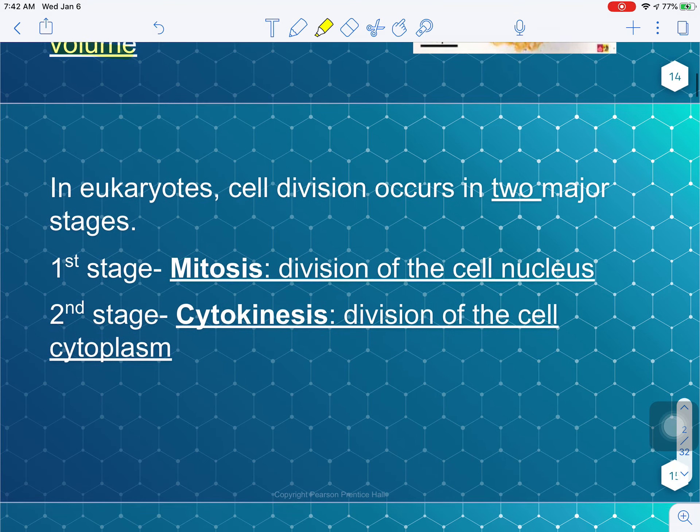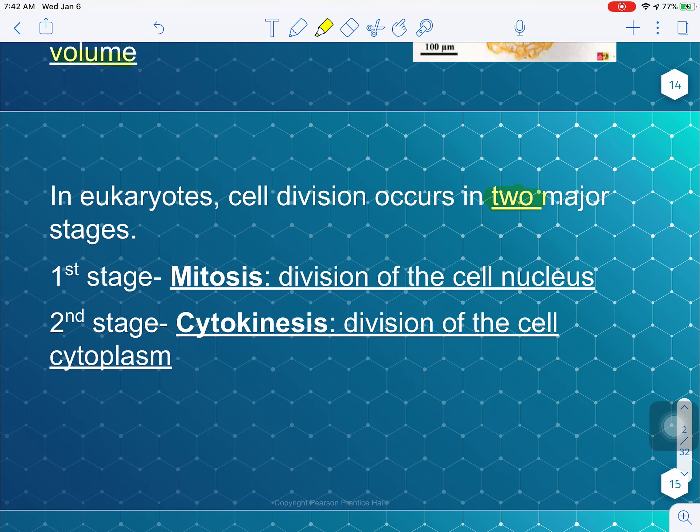Now cell division is going to occur in two major stages. The first stage is called mitosis, which is division of the cell nucleus. The second stage is called cytokinesis. This word cyto is referring to division of the cytoplasm, which is all of the other space inside the cell besides the nucleus. So not just the fluid in the cell, but also all the other organelles are considered part of the cytoplasm. So the first stage mitosis divides the cell's nucleus and is responsible for divvying up the genetic material in the cell. And then the second stage cytokinesis divides everything else.